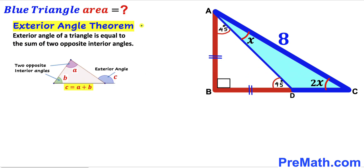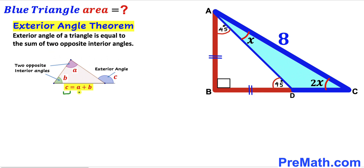Now let's recall the exterior angle theorem. According to this theorem, the exterior angle of a triangle is equal to the sum of the two opposite interior angles. In this diagram, angle C is our exterior angle, while angles A and B are the two opposite interior angles, so angle C equals angle A plus angle B.